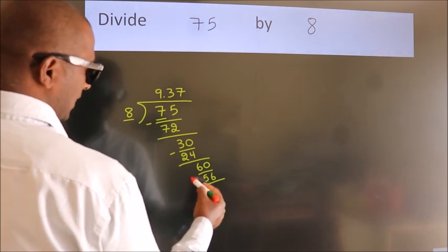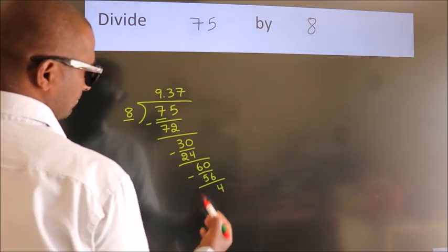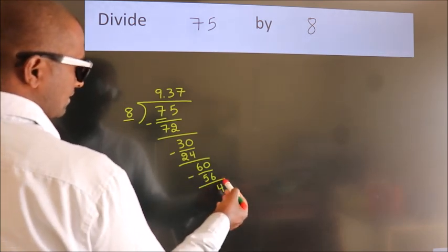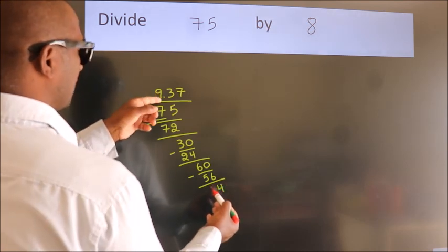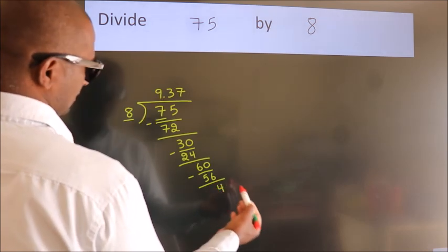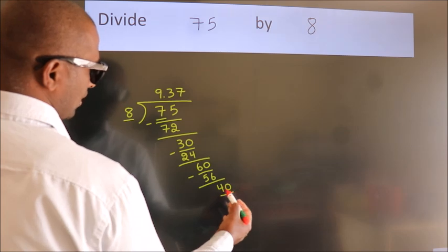Now we subtract. We get 4. After this, we already have the decimal. So directly take 0. So 40.